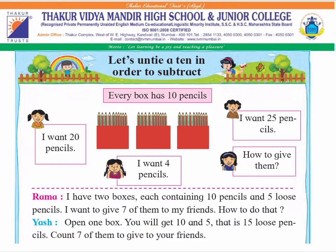Let's untie a tan in order to subtract. Now children, look at the picture carefully. We have three boxes of pencil and each box contains ten pencils. Rama says: I have two boxes, each containing ten pencils and five loose pencils. I want to give seven of them to my friends. How to do that?